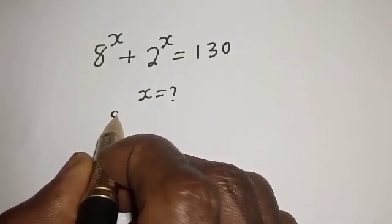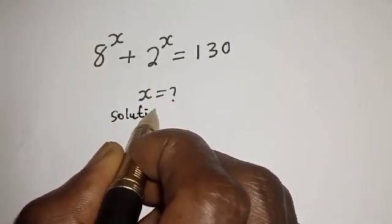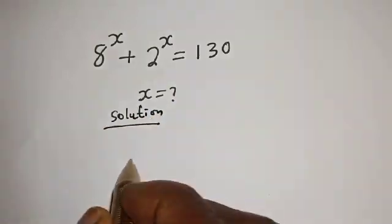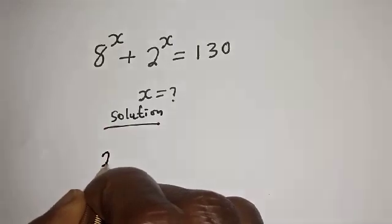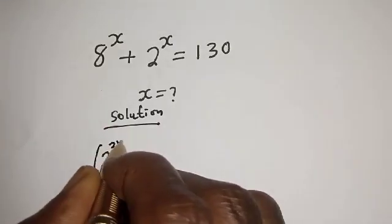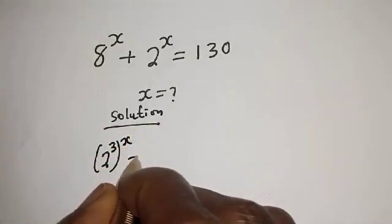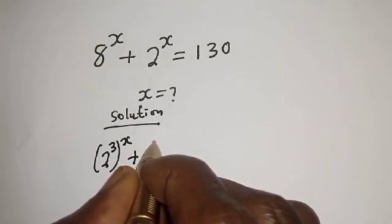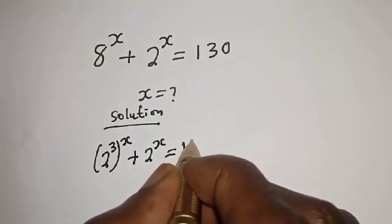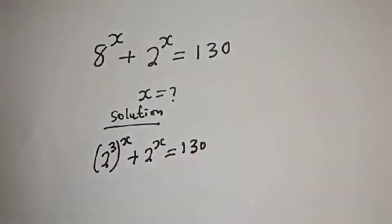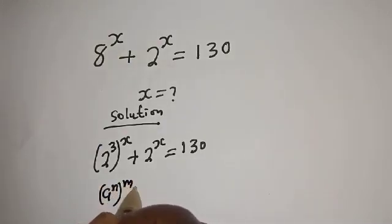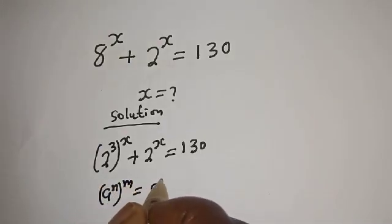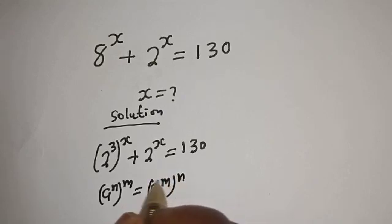Solution. 8 raised to power s can be written as 2 raised to power 3, to the power of s, plus 2 raised to power s is equal to 130. Take note of this exponential rule: a raised to power n to the power of m is equal to a raised to power m to the power of n.